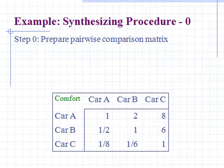Here is the simple pairwise comparison matrix. In the diagonal you can see it's 1, 1, 1. Here you can see 2. This means that car A is 2 times more comfortable than car B. And here you can see it's 1 by 2, so car B is one and a half times more comfortable compared to car A.